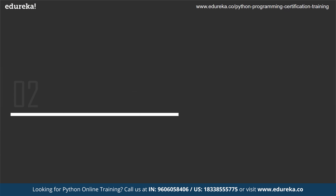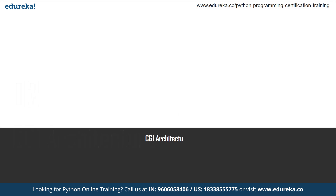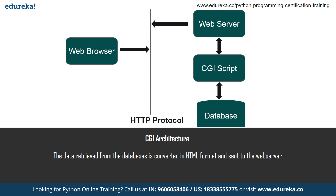Now let's understand CGI programming in detail using the CGI architecture. When a request is made to the web server from the client, the Common Gateway Interface uses external files or programs to handle such requests — and these programs can be written in any programming language. The main goal is to retrieve data from databases, convert it to HTML format, and send it to the web server.